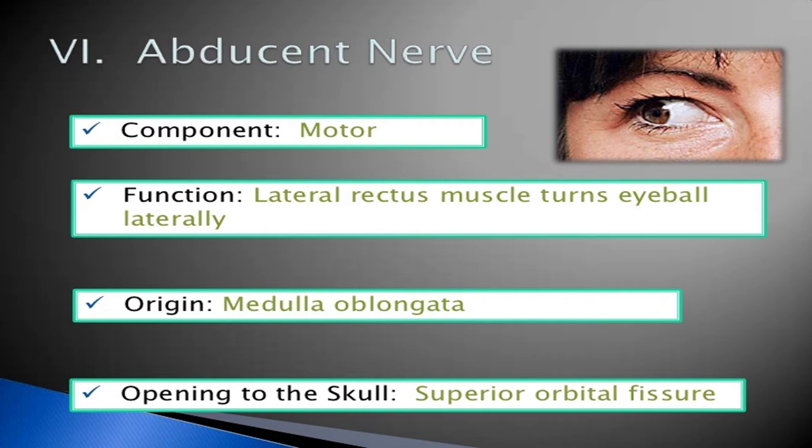The abducens nerve is the sixth cranial nerve. Its function is to turn the eyeball laterally. The abducens nerve helps in lateral movement of the eyeball. Its origin is the medulla oblongata. The opening of the skull is the superior orbital fissure.